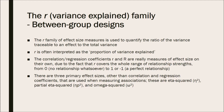A perfect positive or negative relationship. There are three primary effect sizes, other than correlation and regression coefficients, that are used in measuring associations, and these are eta squared, partial eta squared, and omega squared. As partial eta squared is often given in statistical outputs such as SPSS, I won't be covering that one, but I will be focusing on the within and between group designs for eta squared and omega squared.